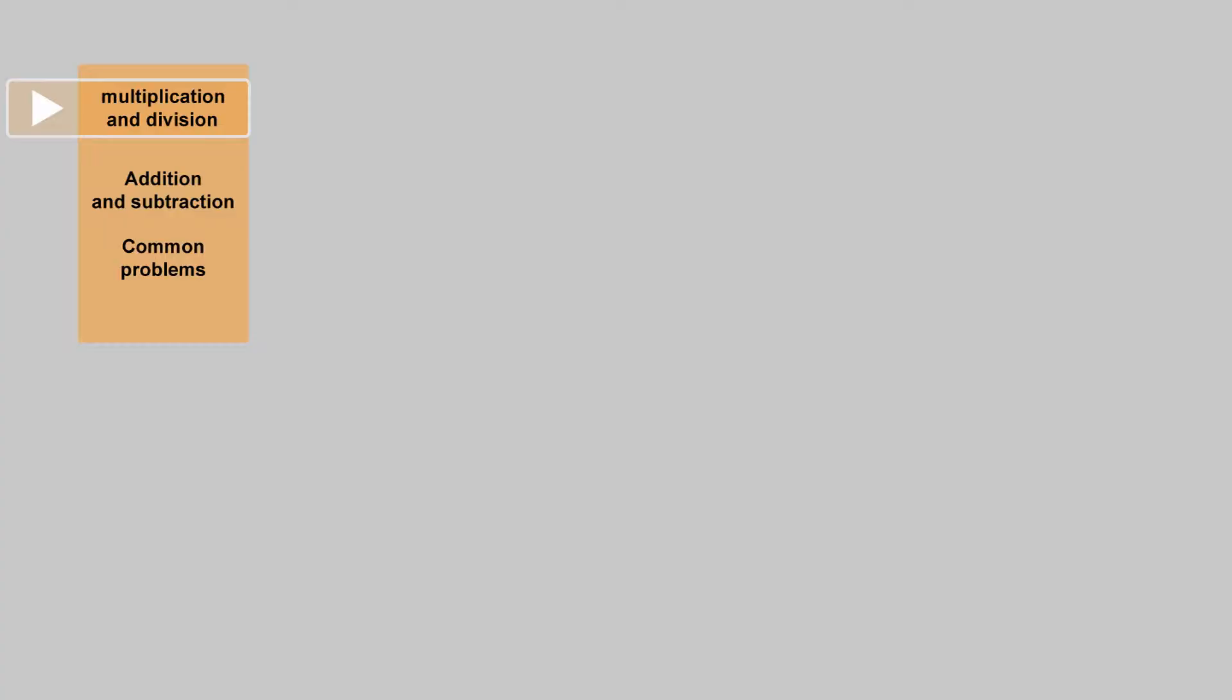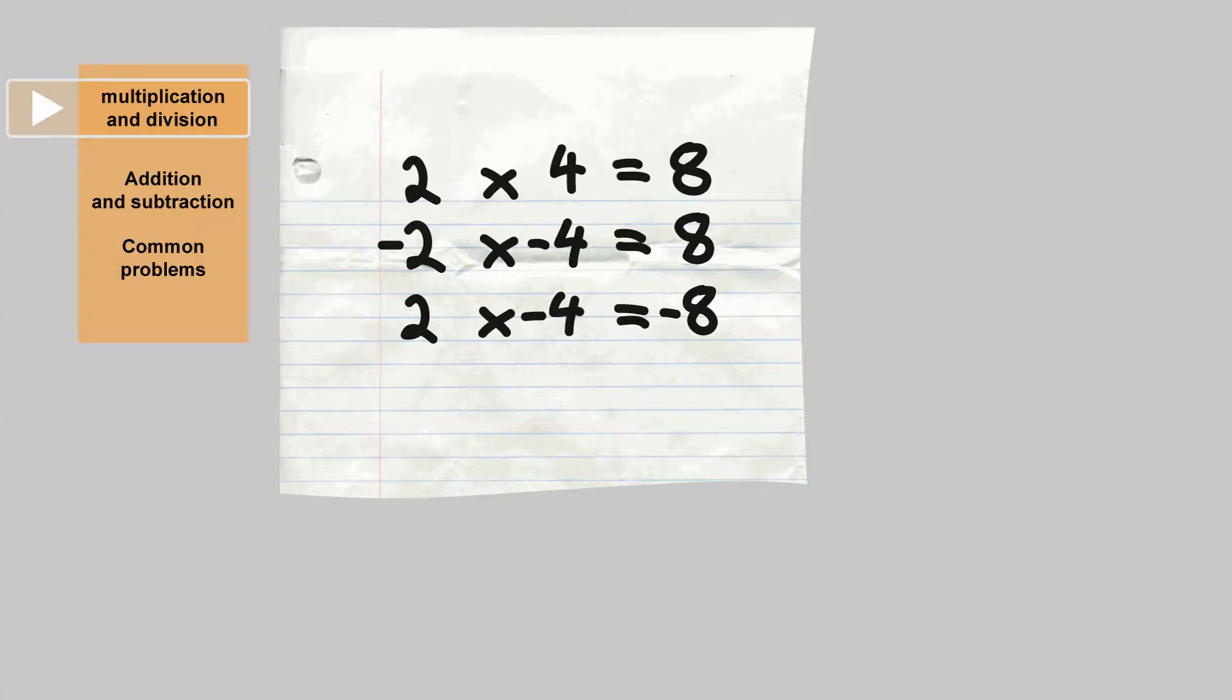Let's start off with multiplication. Here I give a few examples. Wherever the signs are the same, i.e., a positive times a positive or a negative times a negative, then the answer is always positive.